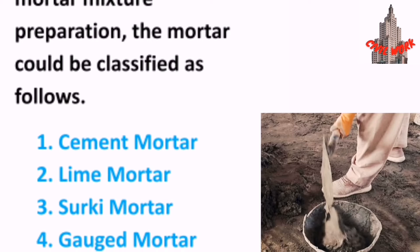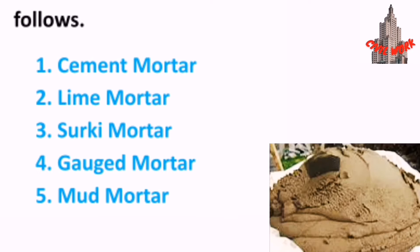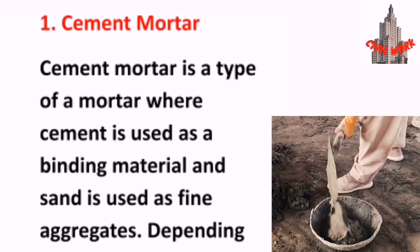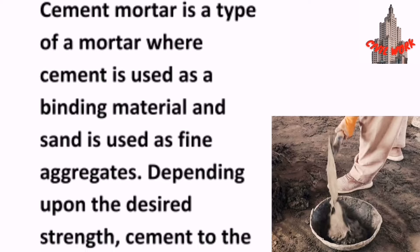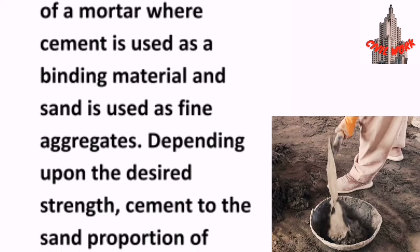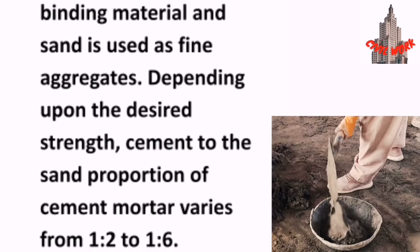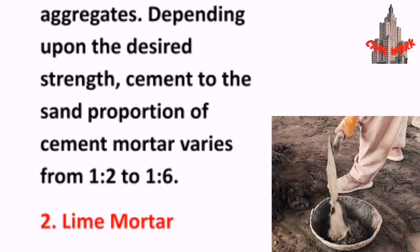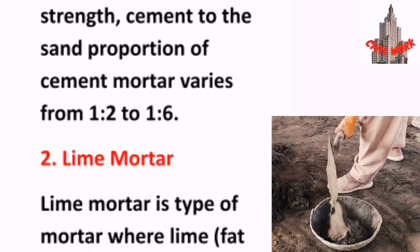The types are: 1. Cement Mortar, 2. Lime Mortar, 3. Surki Mortar, 4. Gauged Mortar, 5. Mud Mortar. Cement Mortar is a type of mortar where cement is used as a binding material and sand is used as fine aggregates. Depending upon the desired strength, the cement to sand proportion varies from 1:2 to 1:6.